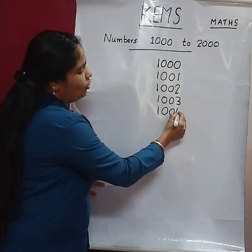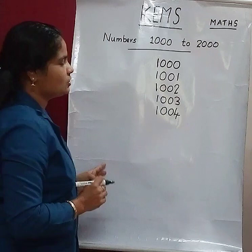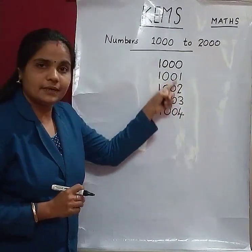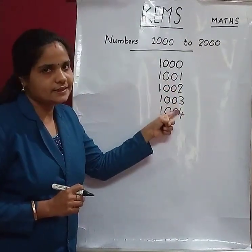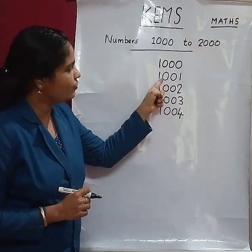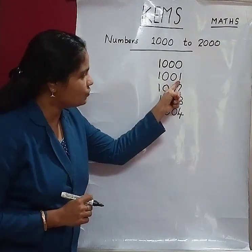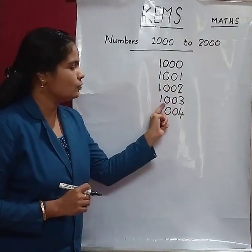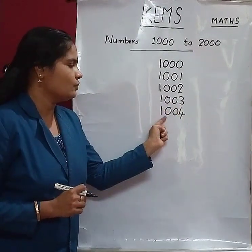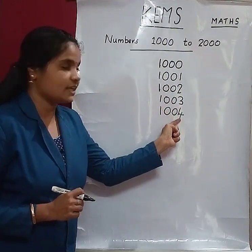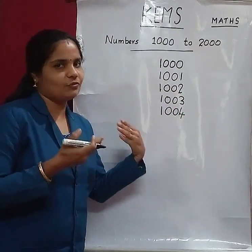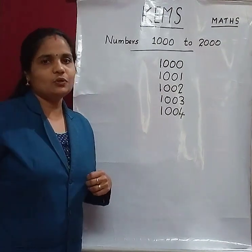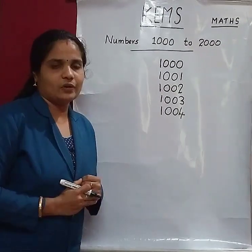So the last numbers change. 1001, 1002, 1003, 1004, 1005, 1006 — and so on.